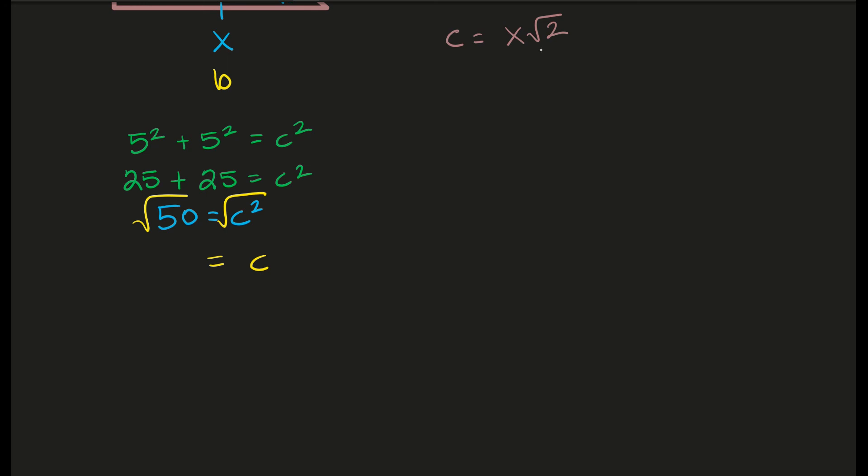Well, this can be simplified. We look for the largest perfect square that can go into 50, and that's 25. 50 divided by 25 is 2. So the square root of 25 times the square root of 2 is 50. Well, you can simplify the square root of 25 because it's 5. So 5 root 2 is the value of c.